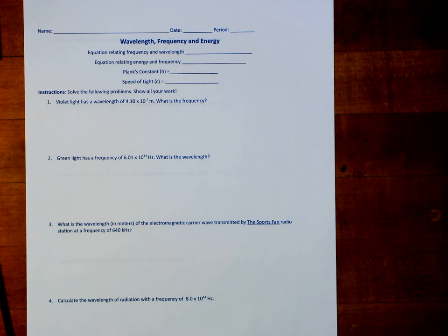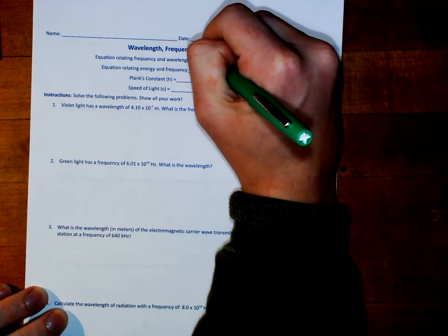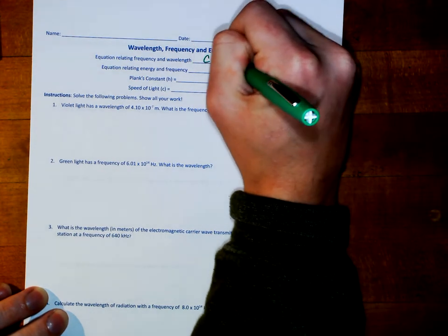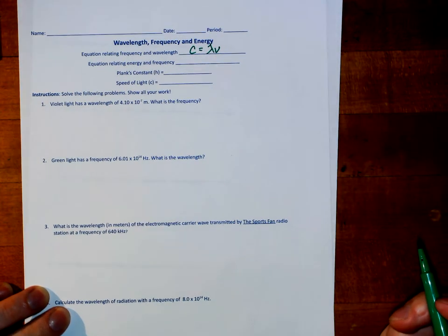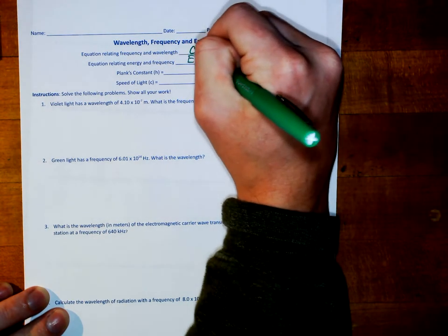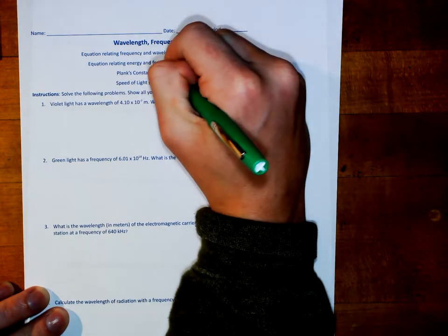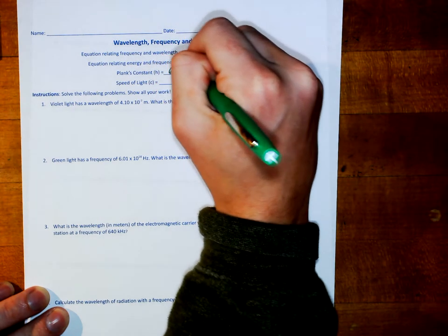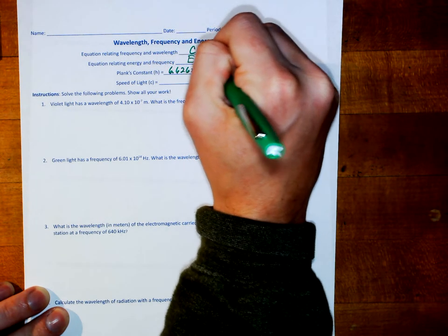Starting at the very top, the equation that relates frequency and wavelength is C equals lambda nu. The speed of light is equal to the wavelength of any wave multiplied by its frequency. The equation that relates energy and frequency is E equals H nu, where the energy of a wave is equal to Planck's constant multiplied by the frequency of that wave. Planck's constant is 6.626 times 10 to the negative 34th joule seconds.